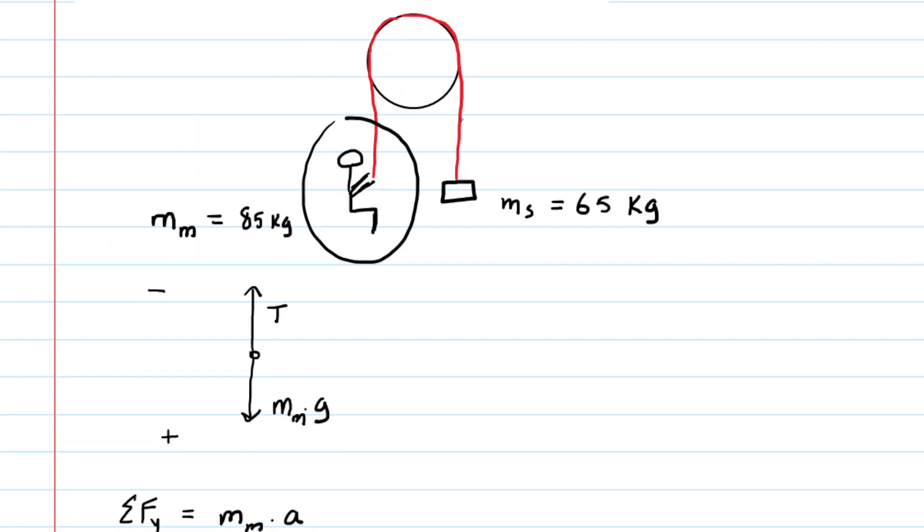But another system that we can analyze would be, of course, the sandbag right here. So it's the same idea. We'll represent the sandbag as a dot. Now, the sandbag is going to be traveling in an upward direction, of course, since the man is going down. So the sandbag is going up, and we can assign the upward direction positive for the sandbag and the downward direction negative.